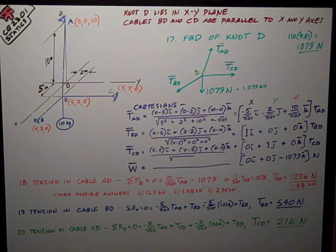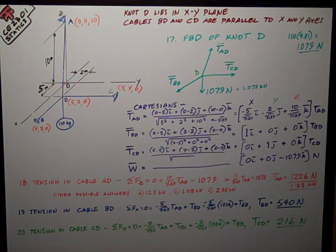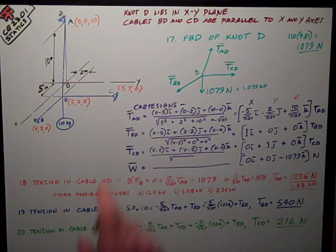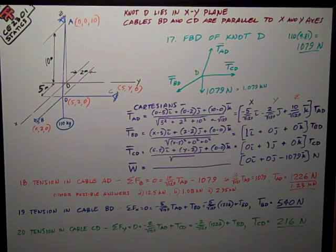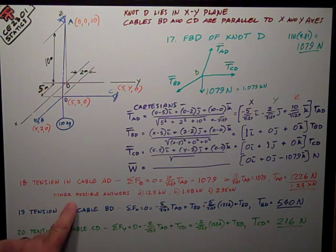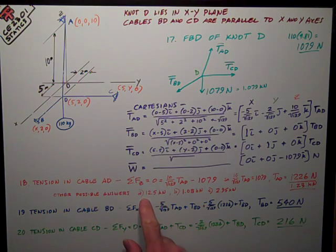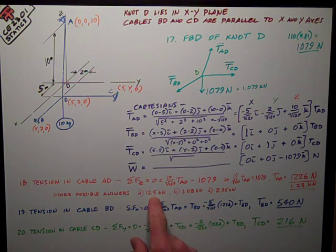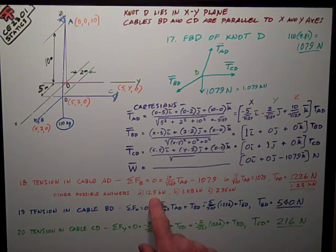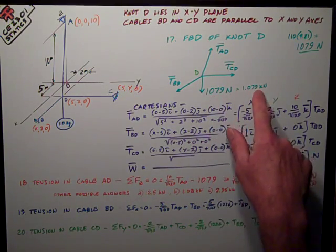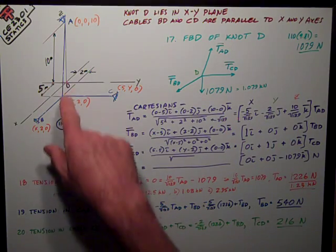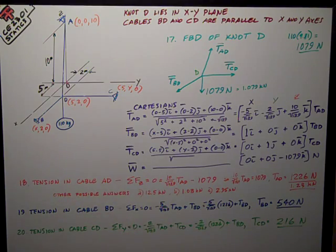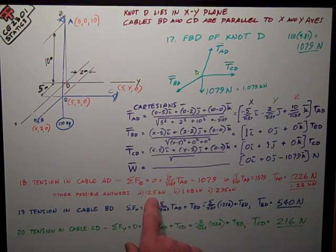Real quickly I want to talk about the other possible answers. I know this is a composite of all three tests, and it's not exactly like any of them, but every one of them had other possible answers for number 18. One was something like 12.5 kilonewtons. You've got to use common sense. I've got 1.08, essentially, kilonewtons, and this cable is mostly vertical. So it's going to get a little bit of additional force from the fact that it's not purely vertical, but it's not going to be 10 times as much.